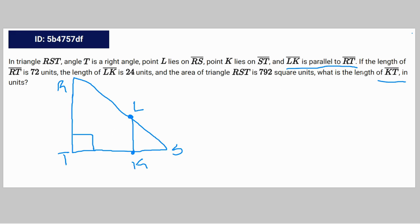You're given the information that the length of RT is 72 units and LK is 24 units. The area of triangle RST is 792, so we're going to do this: 792 equals the area formula, one half height times base, which is TS.